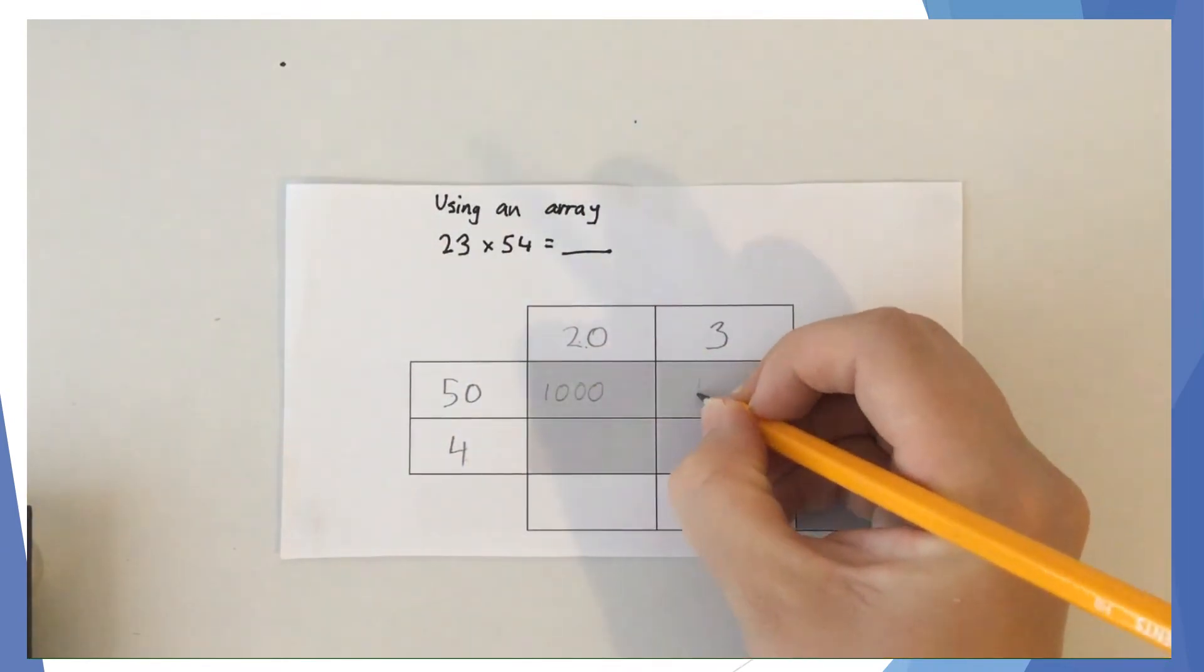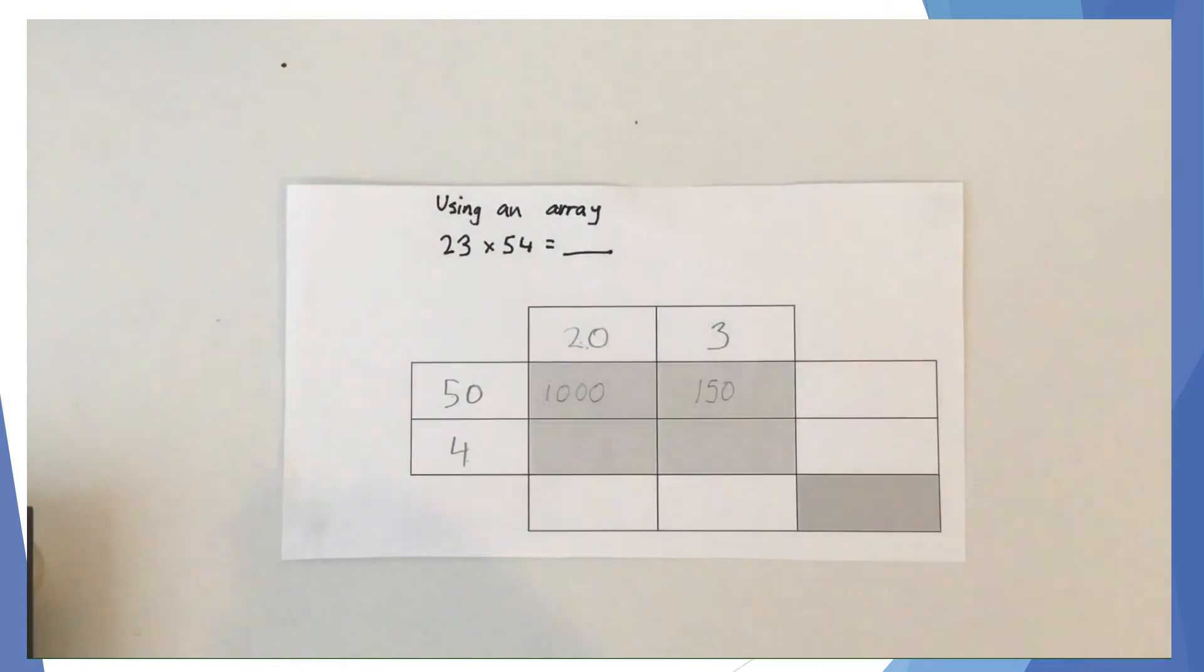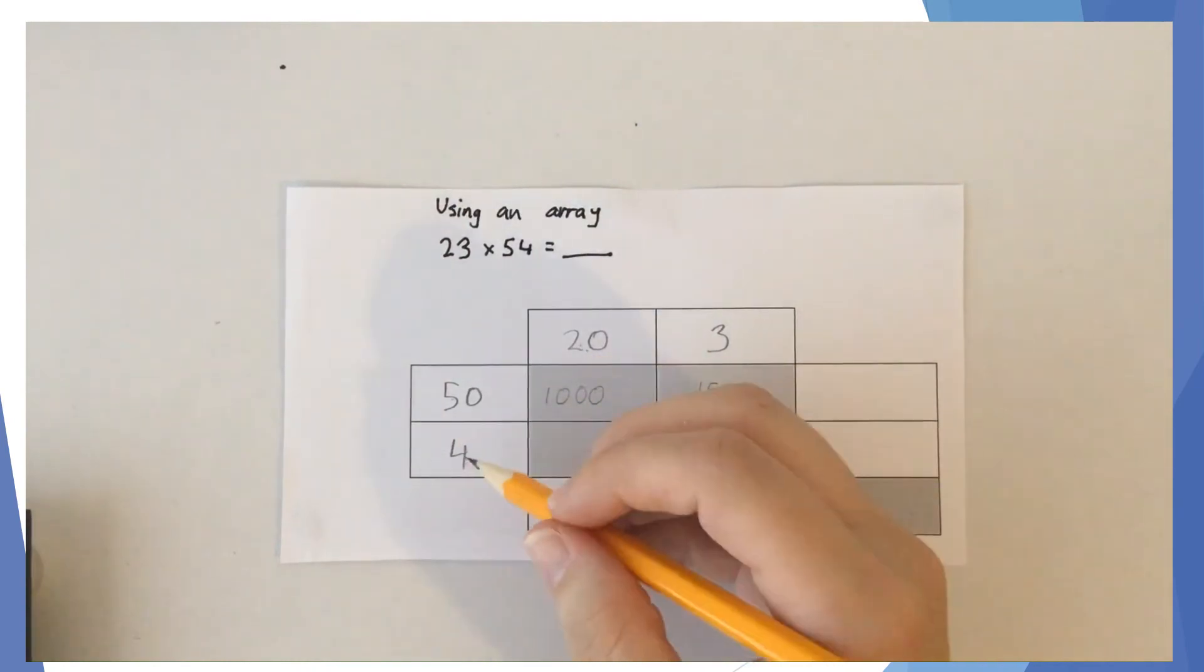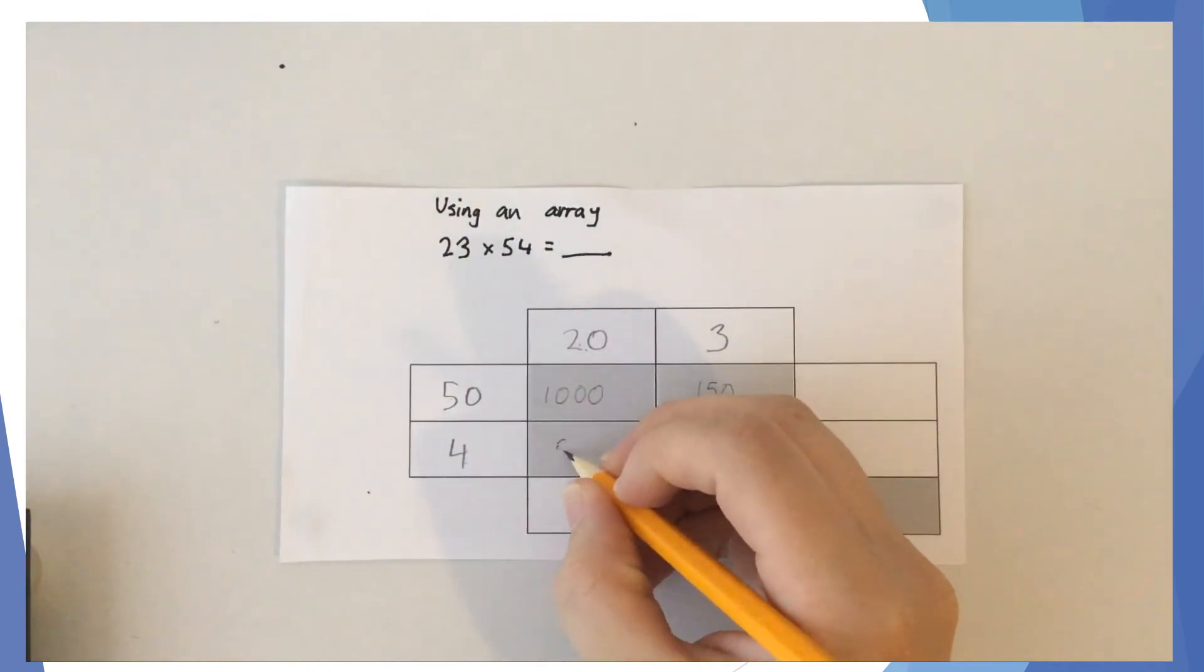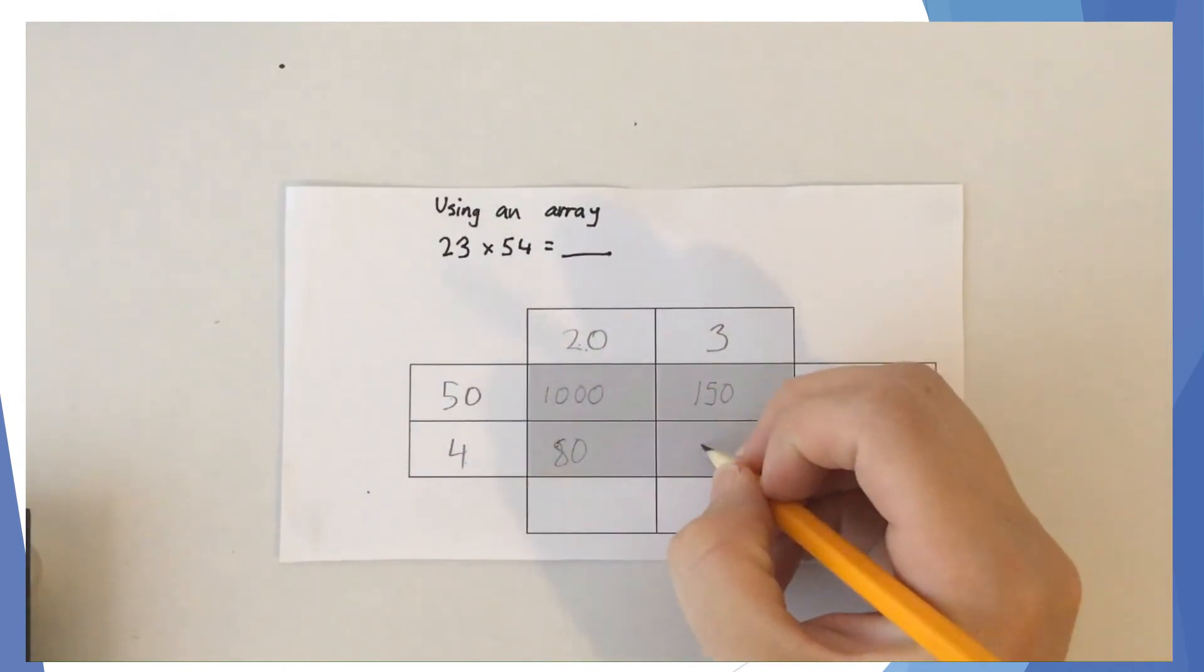50 times 3 is 150. Then we can do 20 times 4. 2 times 4 is 8, and we need the zero at the end, so 80. Then 3 times 4 is 12.